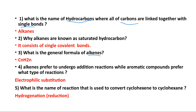Alkenes prefer to undergo addition reactions — addition of hydrogen, addition of water, addition of halogen, addition of HCl, and so on. The question asks: while aromatic compounds prefer what type of reaction? If you refer to the slides, aromatic compounds undergo electrophilic substitution, where H⁺ is substituted with an electrophile. So it's electrophilic substitution reaction.